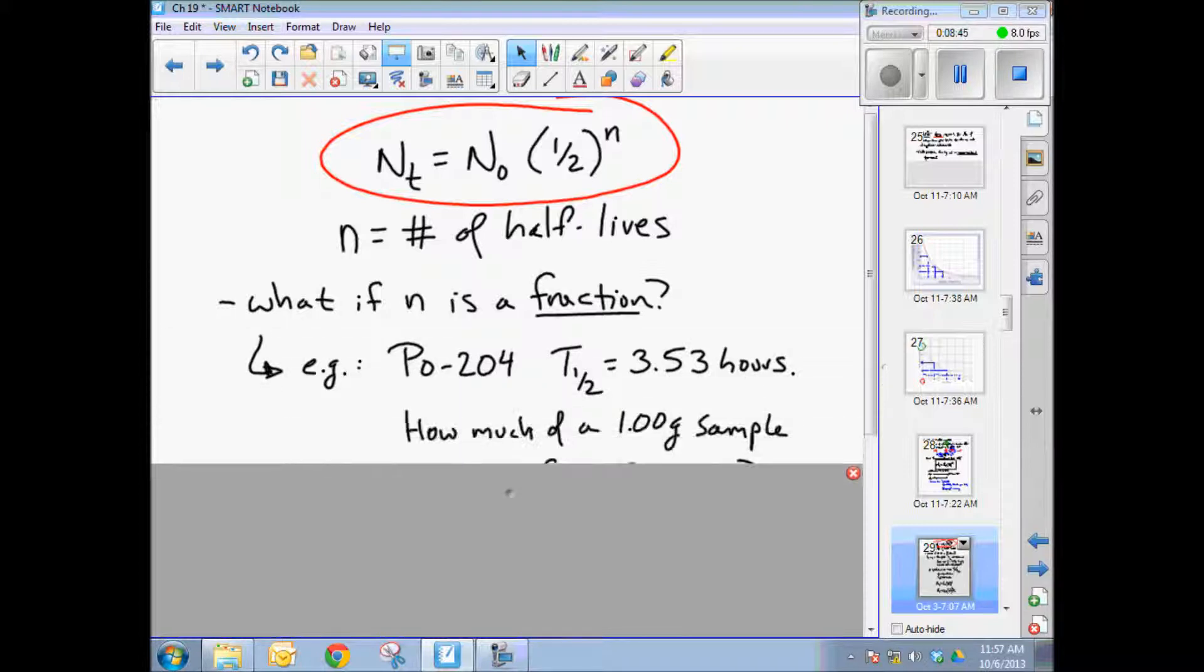Well, that's really not too hard to do. Let's work with an example here. Here's polonium 204. It's got a half life of 3.53 hours. Let's say we started with 1.00 grams of polonium 204. So that's our N sub zero. That's our original amount. How much remains after 12 hours?